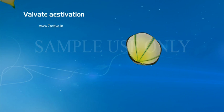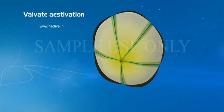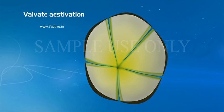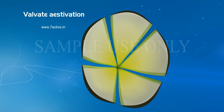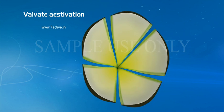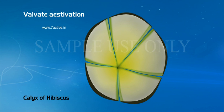Valvate Estivation: Perianth lobes are arranged closely with small gaps between them. Example: Calyx of Hibiscus.